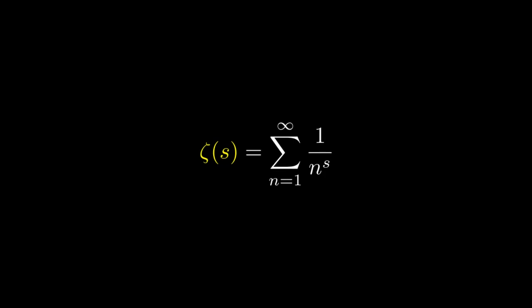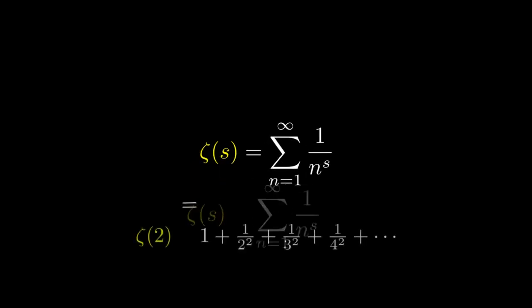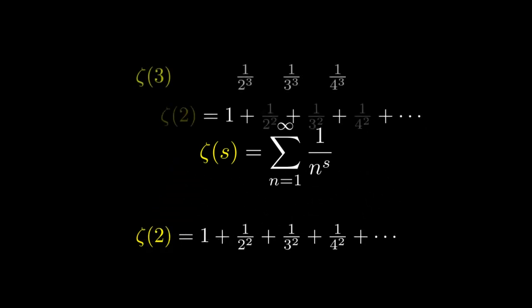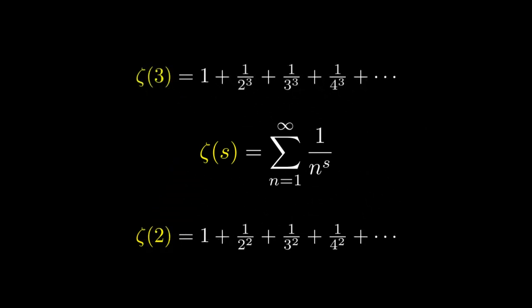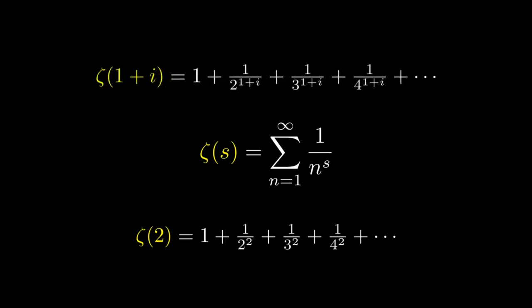What is the Riemann zeta function? The zeta function is an infinite sum with the argument s being any complex number. We can see that if s equals 2, we get the infinite sum as shown above. Since the zeta function can take complex arguments, it is nice to visualize the zeta function on the complex plane.